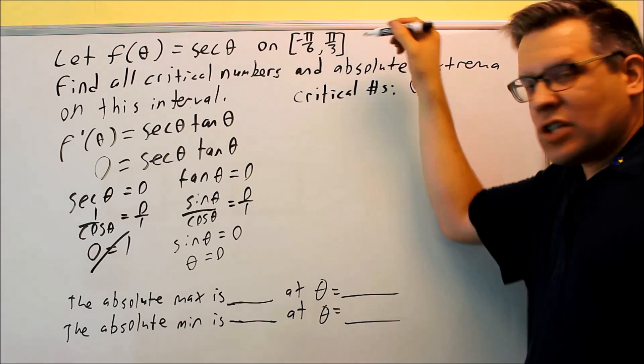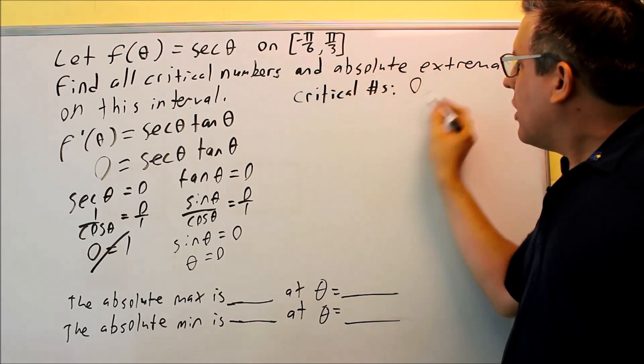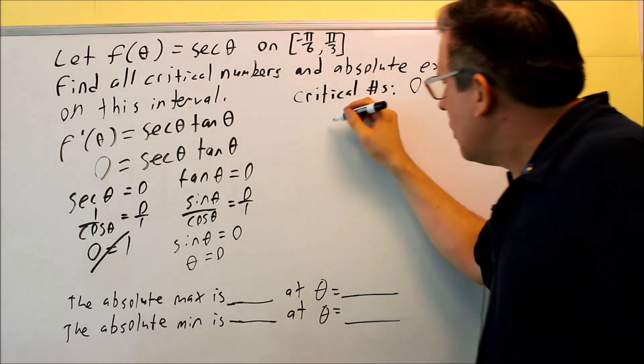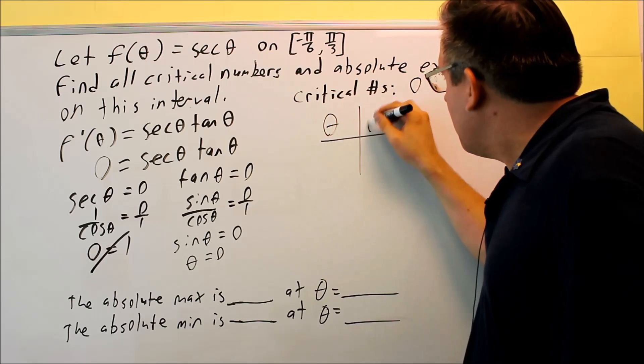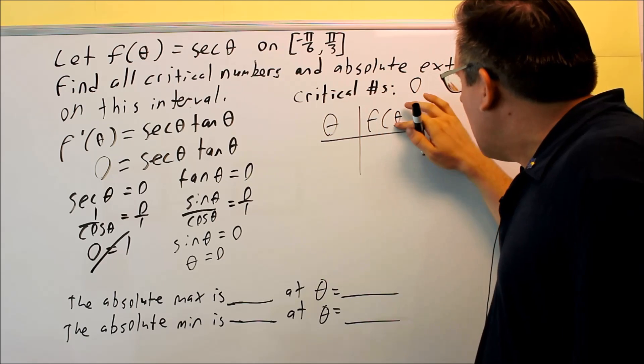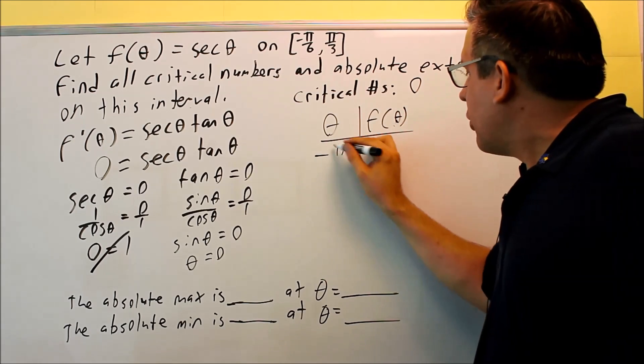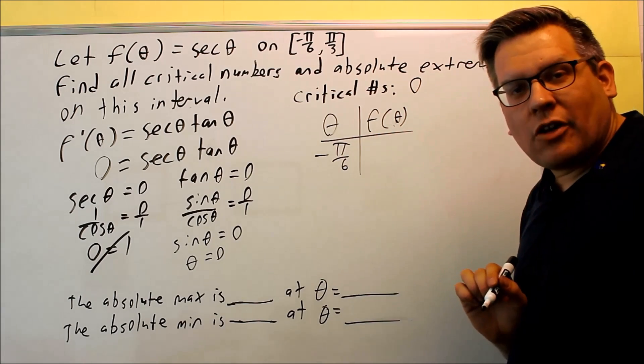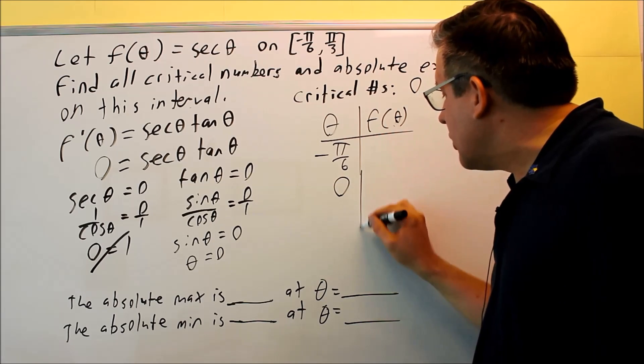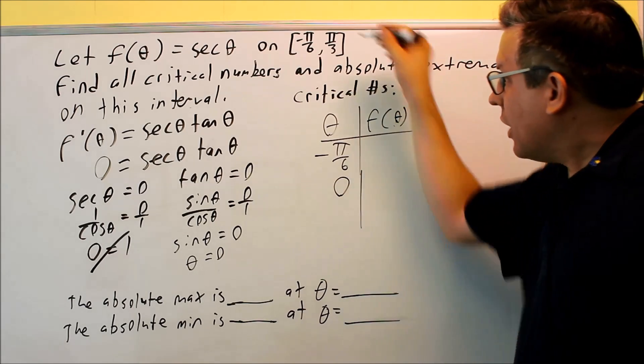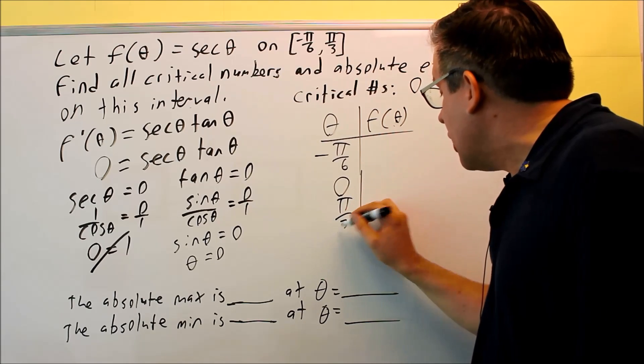Now, the next thing I'm going to do is set up a table with my endpoints and also my critical number. Okay, so I only have three to check this time. I'm going to do theta and f of theta. So first I'm going to put in the left endpoint, negative pi over six. I'm going to put in the zero. That's the only critical number we found. And then I'm going to put in pi over three.